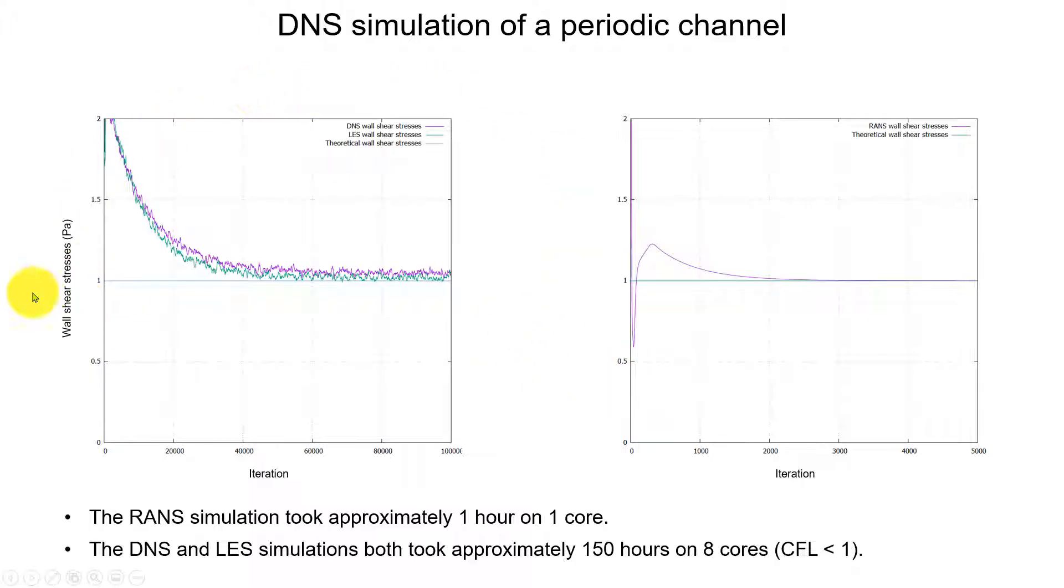Now we look at the instantaneous values. We integrate it at the wall. Remember that we have a theoretical solution that should be 1 Pascal and see that the DNS and LES have those fluctuations. Look at that. We need to let it run a lot of iterations. Here we're looking at iteration, but time, it was like 100 seconds, which takes a lot of time to stabilize. We get a solution close to one, but look at what happened here. When we put a RANS model, it goes precisely to the solution. What is interesting is that using the same mesh, the RANS model just took approximately one hour using one core. Instead, the DNS and LES both took approximately 150 hours using eight cores with a CFL less than one. Later in the theory, we're going to see what is the CFL. Here we see the importance, why we are interested in using RANS.